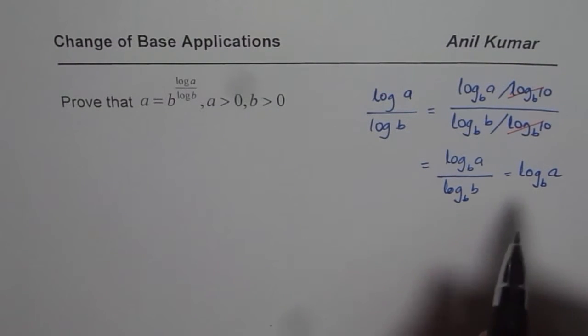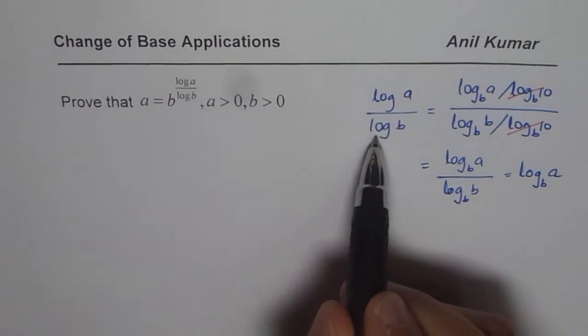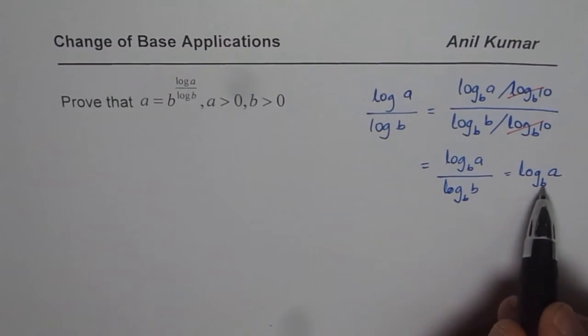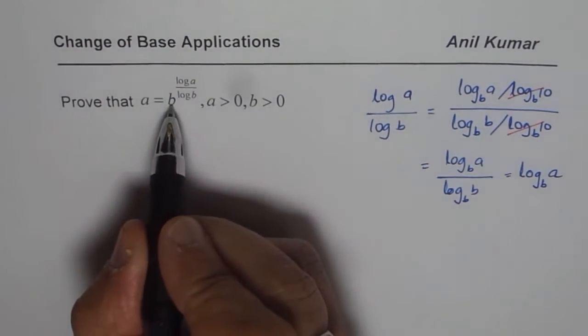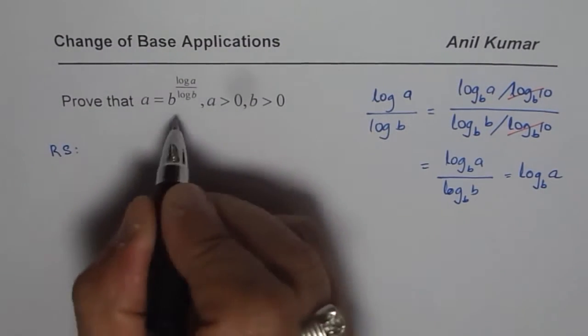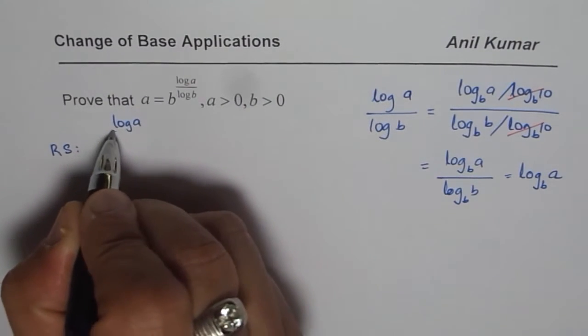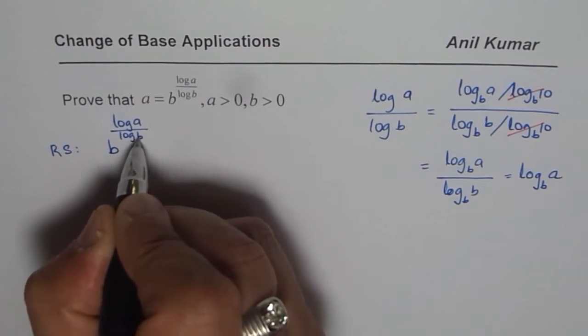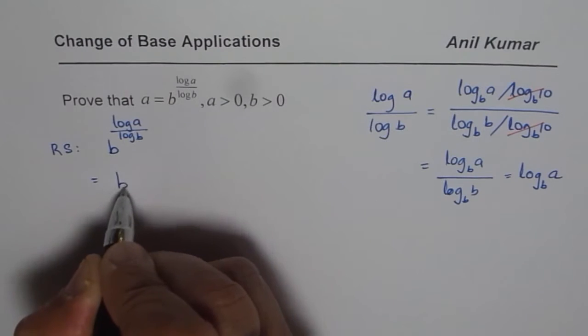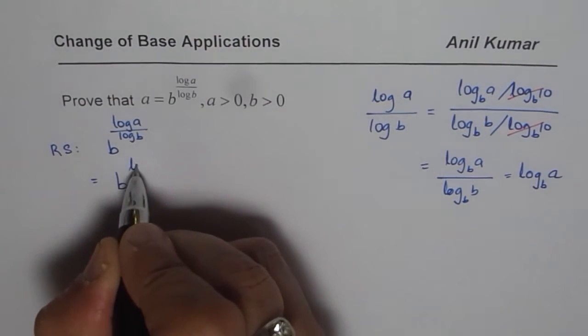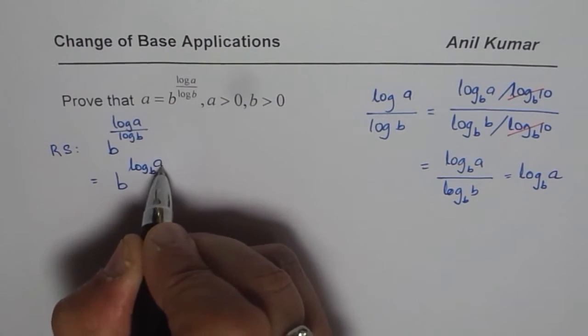Now, since log A over log B is log B of A, I can write down the right hand side, which is B to the power of log A over log B, as equals to B to the power of log B of A.